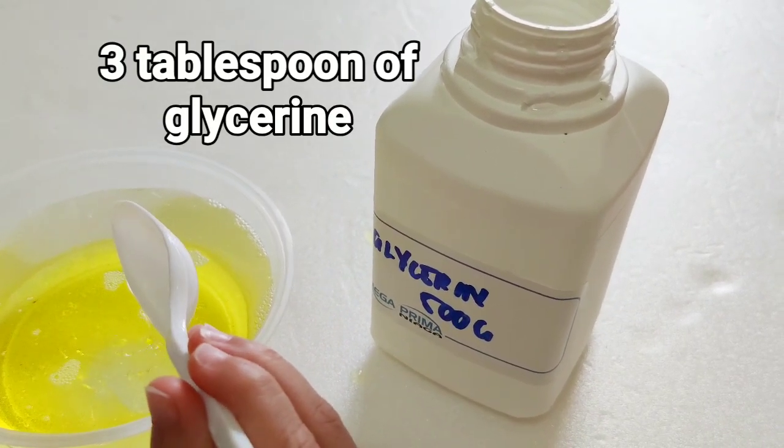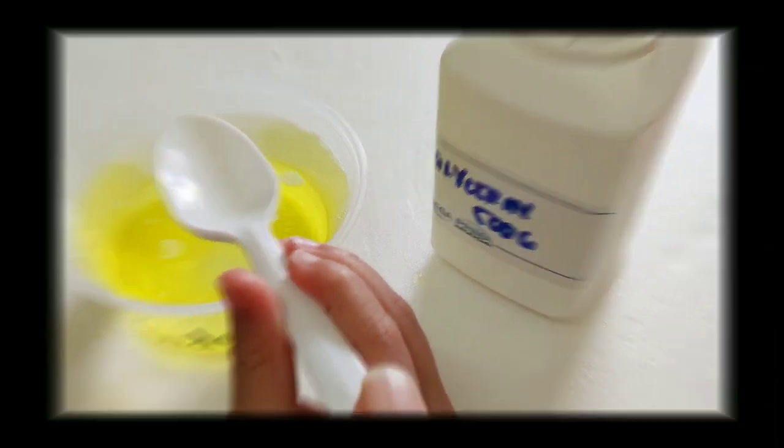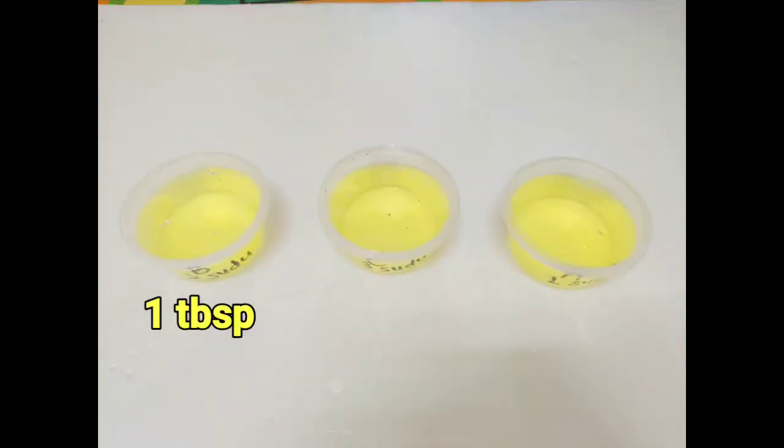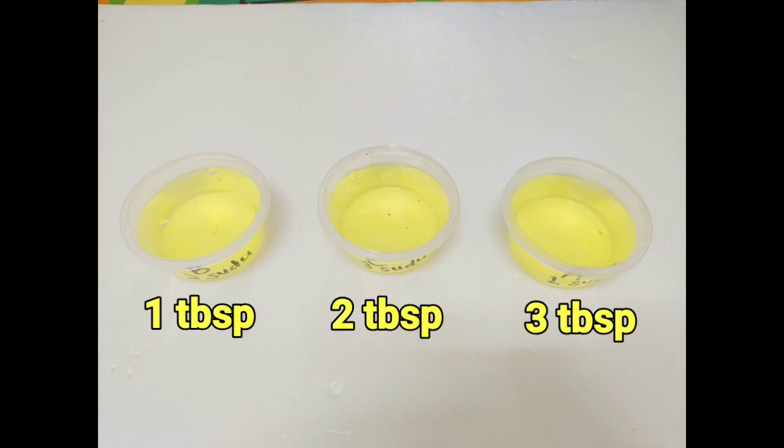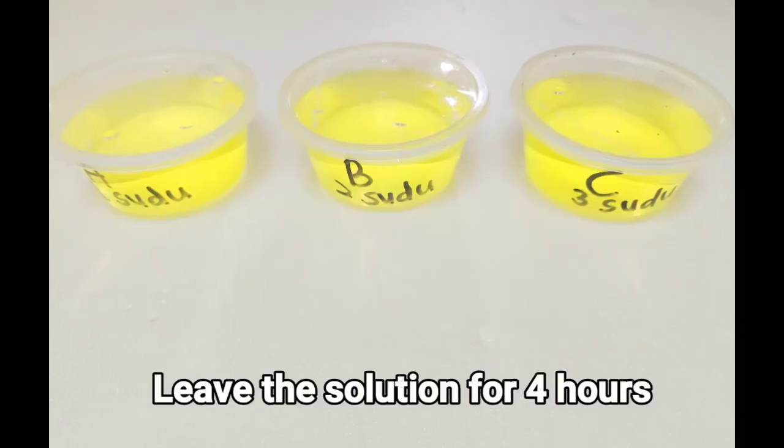Now our solution of soap and glycerin is done. There are 1 tablespoon, 2 tablespoons, and 3 tablespoons of glycerin used in this experiment.